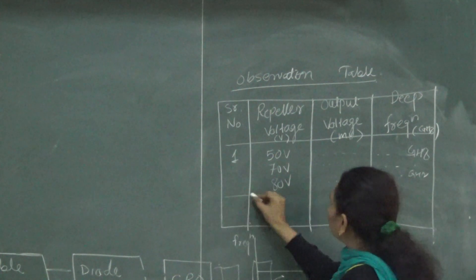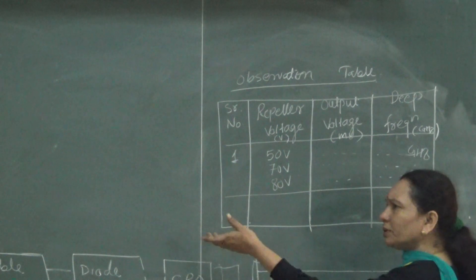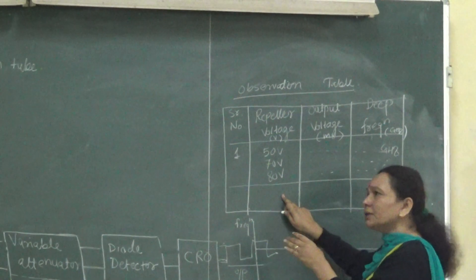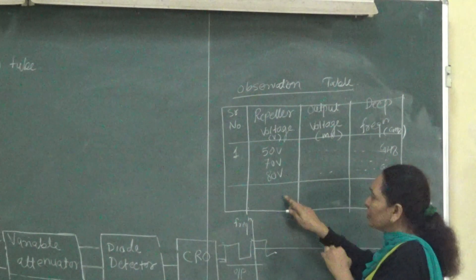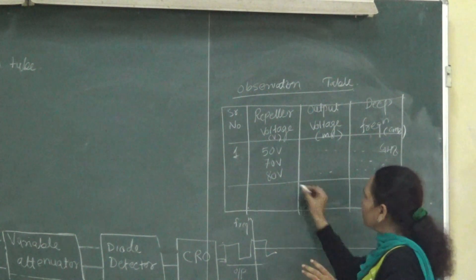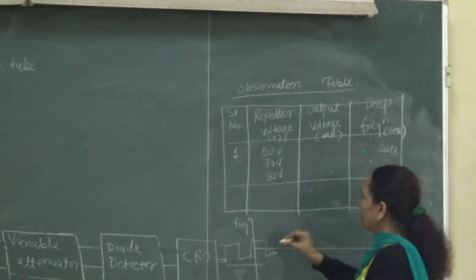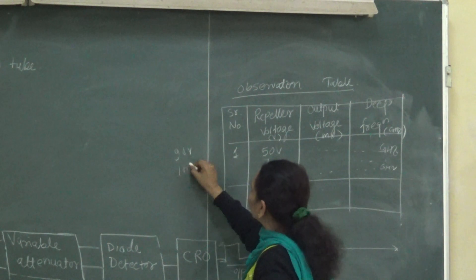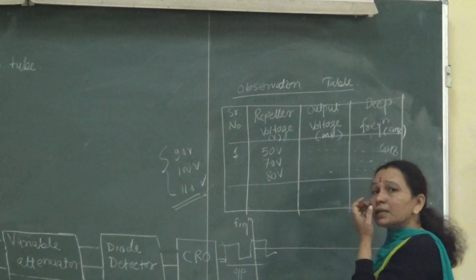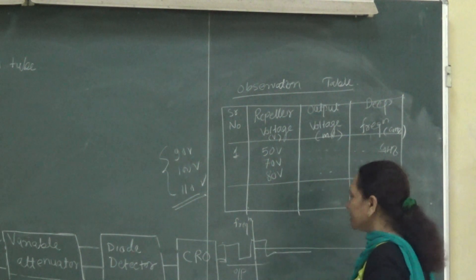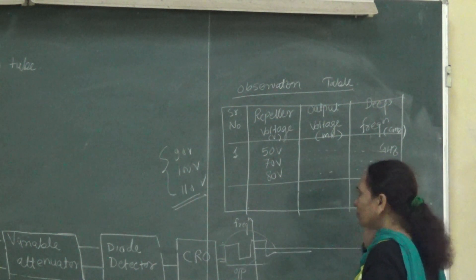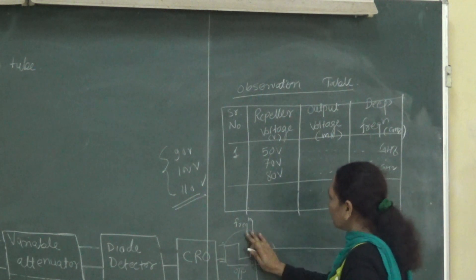After some point you will get no signal on the CRO even though you are changing the repeller voltage. For example, at 90, 100, or 110 volts you may not get any output — just a straight line. We do not consider these voltages where there is no output. These voltage gaps between modes are where no oscillation occurs.